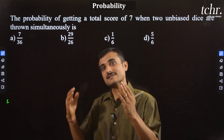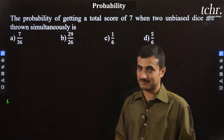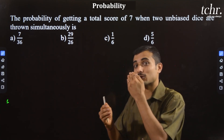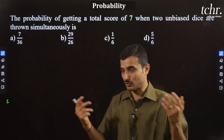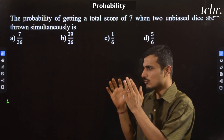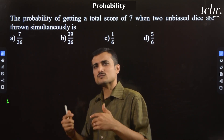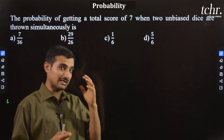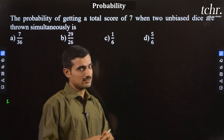First POC, second POC — these two topics are combined. The probability of getting a total score of seven when two unbiased dice are thrown simultaneously. This is the first question.